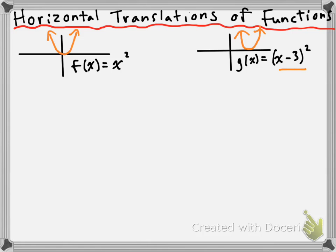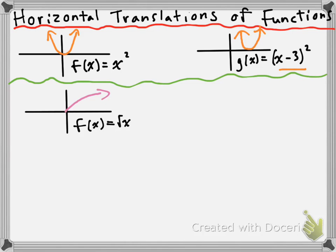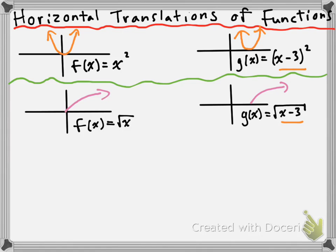Let's look at the square root function again. This is our parent square root function, f of x is equal to the square root of x. If we horizontally translate this to the right by three units, we get g of x is equal to the square root of x minus 3. We've replaced x with x minus 3 inside the function, which indicates we've moved three units to the right. If it was x plus 3 underneath the square root, we would have moved three units to the left.